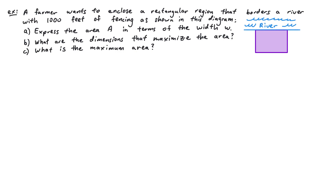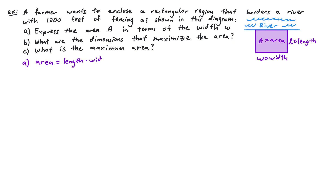In this example, a farmer wants to enclose a rectangular region that borders a river. There is 1000 feet of fencing available. Looking at the diagram, there's a river on the north side so no fencing is needed there — however, there will be three sides of fencing needed. In part A, we want to express the area in terms of the width. Labeling our quantities: A for area, W for width, and L for the length. The area of a rectangular region is length times width, so A equals L times W.